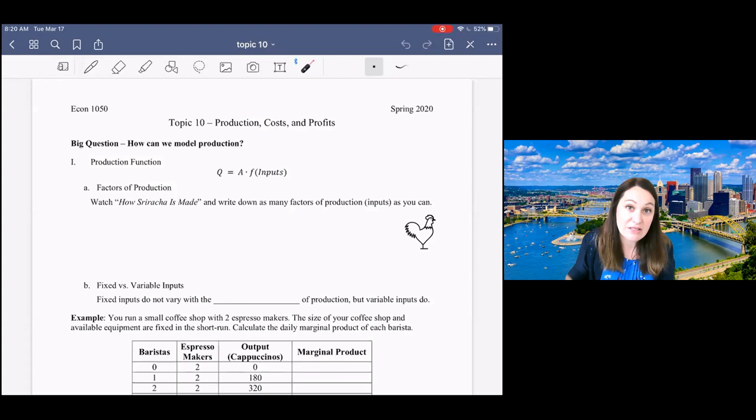So in an upper division course we would start by defining a function, a mathematical function to describe the production process. We have Q is output, quantity produced, A is some technology, and then we have a function of our inputs. We have lots of different inputs into the production process, but we tend in economics to break down those inputs into four broad categories.